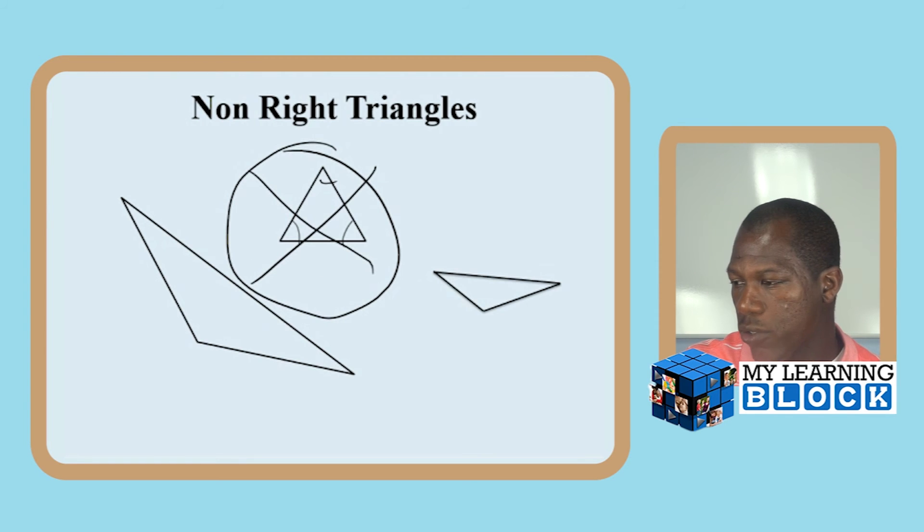This angle right here as well as this angle here are greater than 90 degrees, therefore they are obtuse angles and not right triangles. So that kind of cancels both of them out.